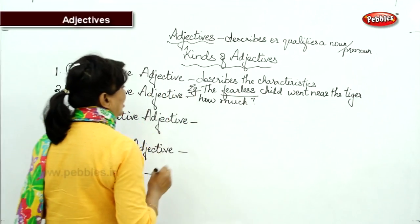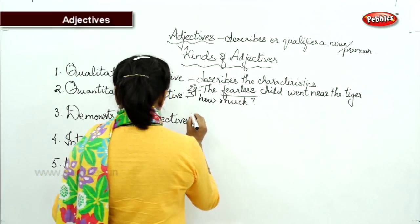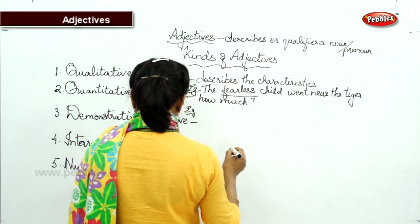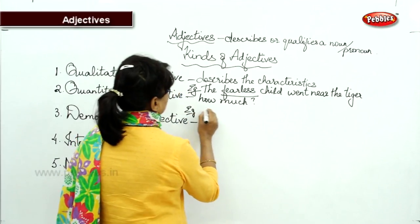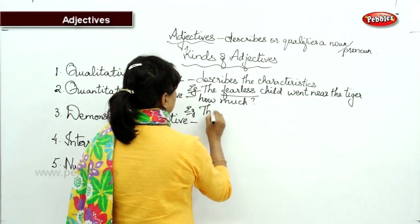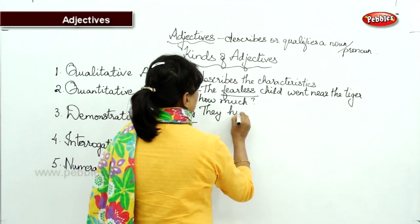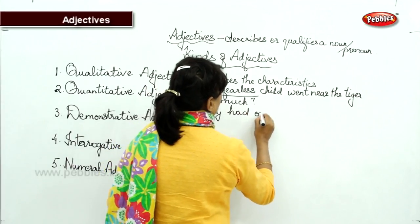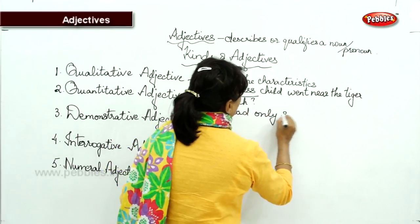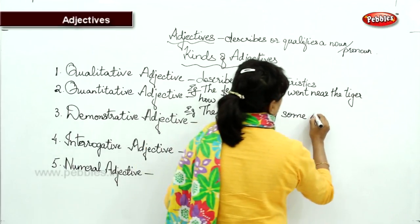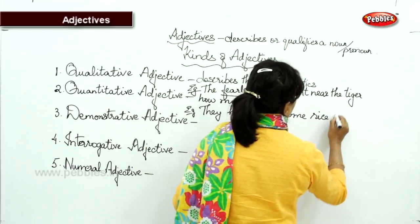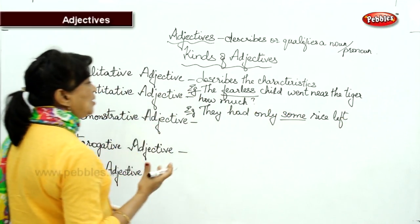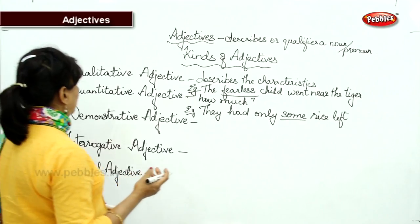The quantitative adjective answers the question 'how much.' For example: 'They had only some rice left.' Here, 'some' tells us how much rice was left — 'some' is the quantitative adjective.